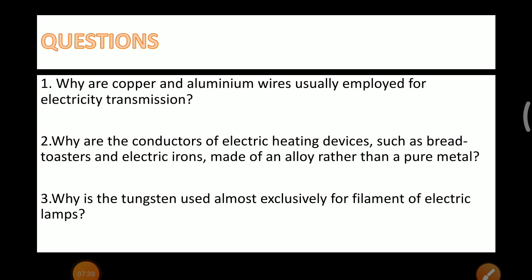You have to answer the following questions: First, why are copper and aluminium wires usually employed for electrical transmission lines? Second, why are conductors of electric heating devices such as bread toasters and electric irons made of an alloy rather than a pure metal? Third, why is tungsten used almost exclusively for the filament of electric lamps?